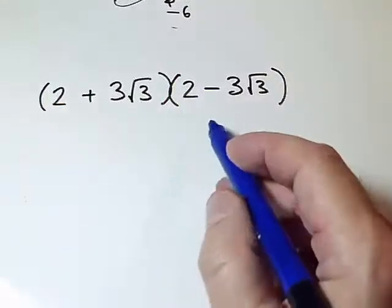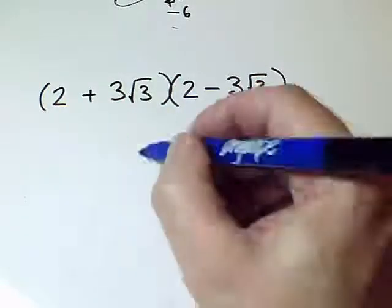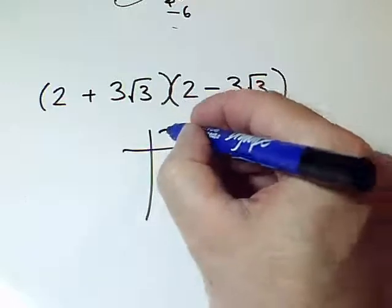So here we've got two identical brackets, both with surd expressions, but with a different sign in the middle. So we'll multiply out the brackets with the grid.